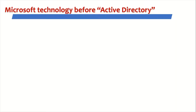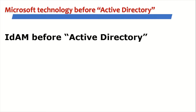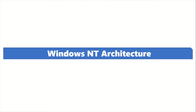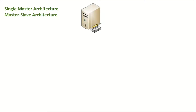Let us understand what was there before Active Directory — who was responsible for identity and access management before it. Active Directory was introduced in Windows 2000 Server, and prior to Windows 2000 Server we had Windows NT, or New Technology. Let us see the Windows NT architecture in a graphical manner. This architecture is also known as a single master architecture, or a master-slave architecture, wherein we have a server configured as a domain controller called the Primary Domain Controller.